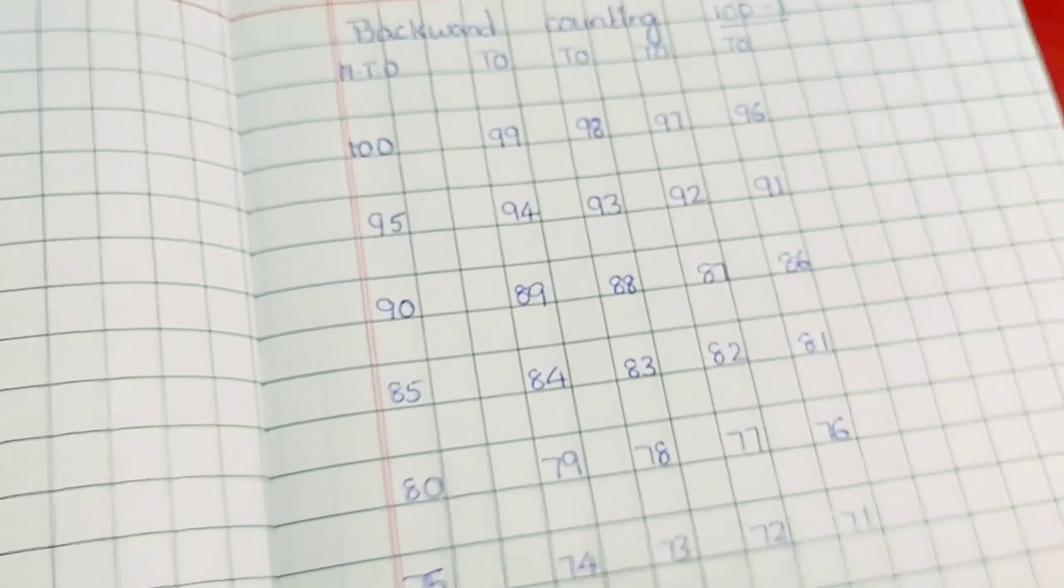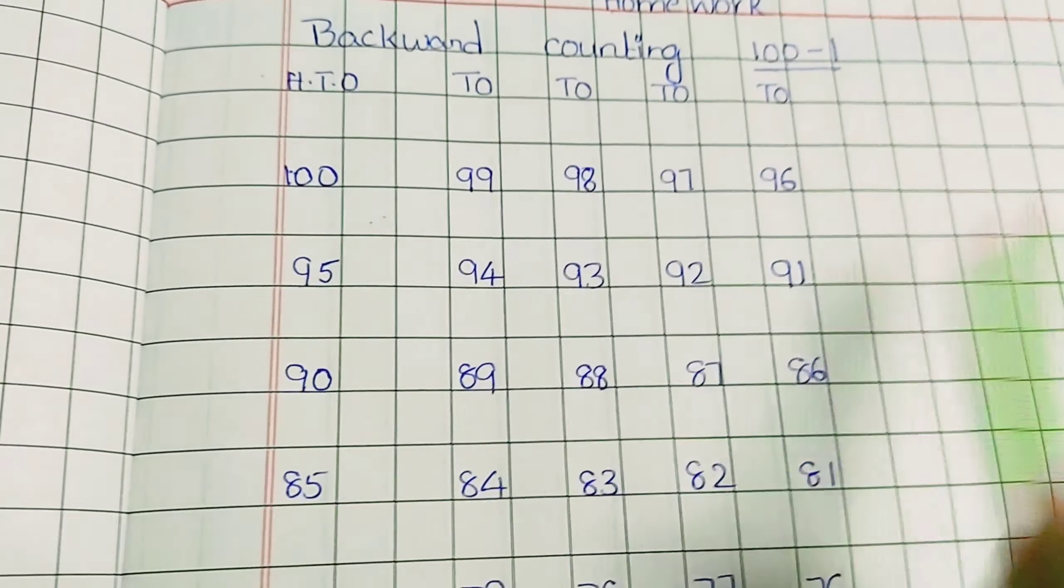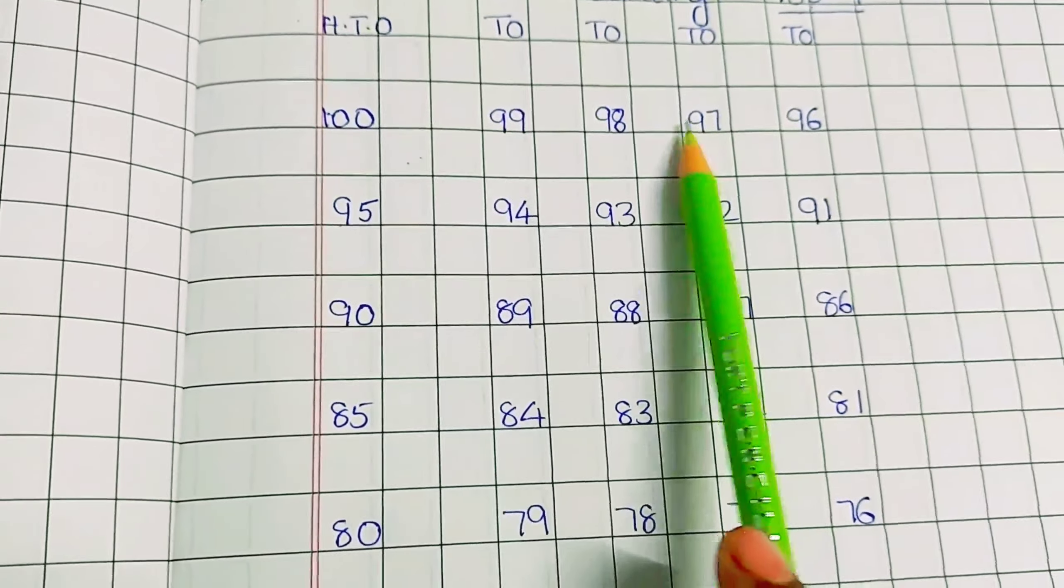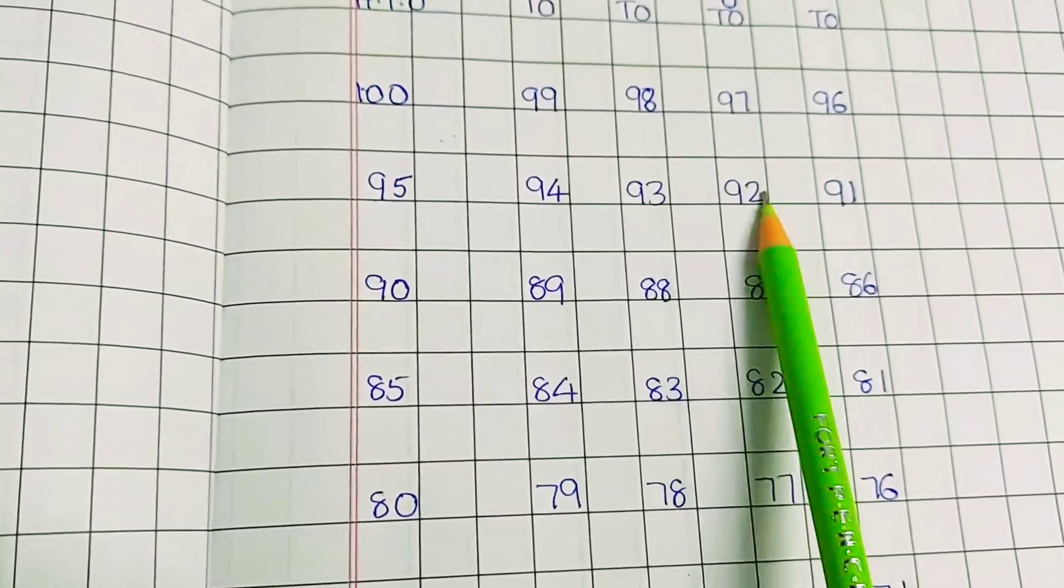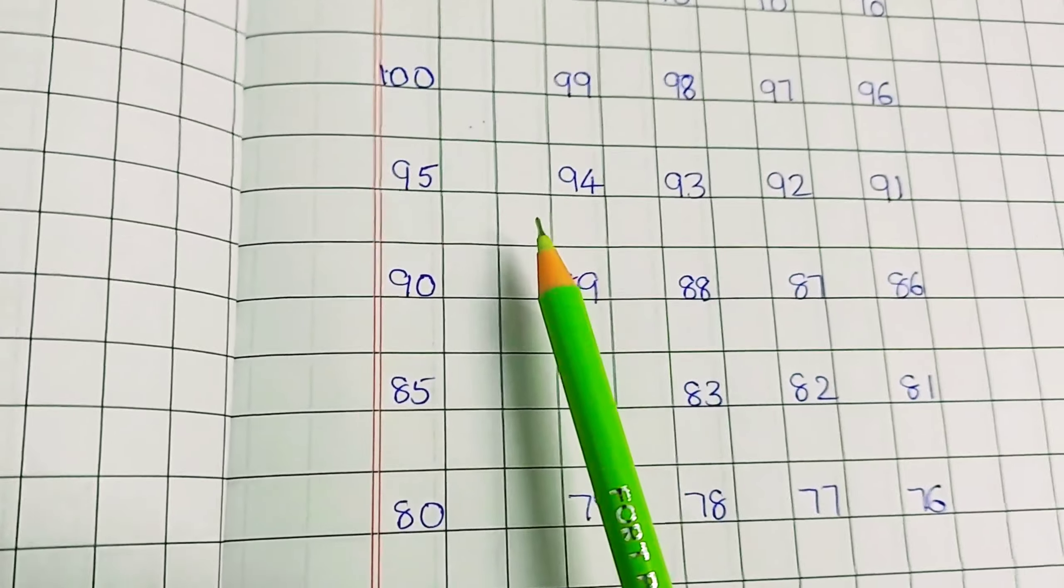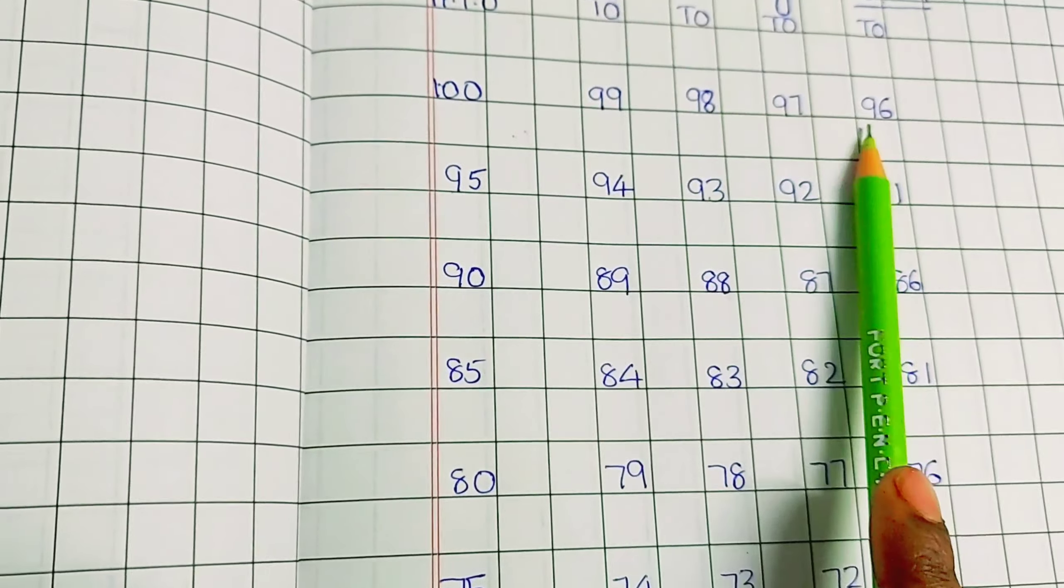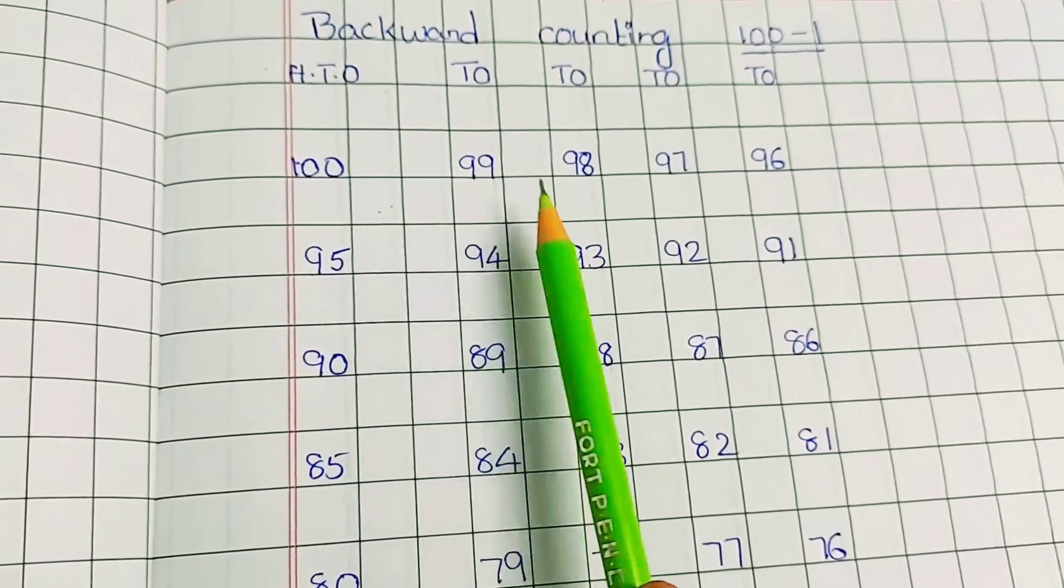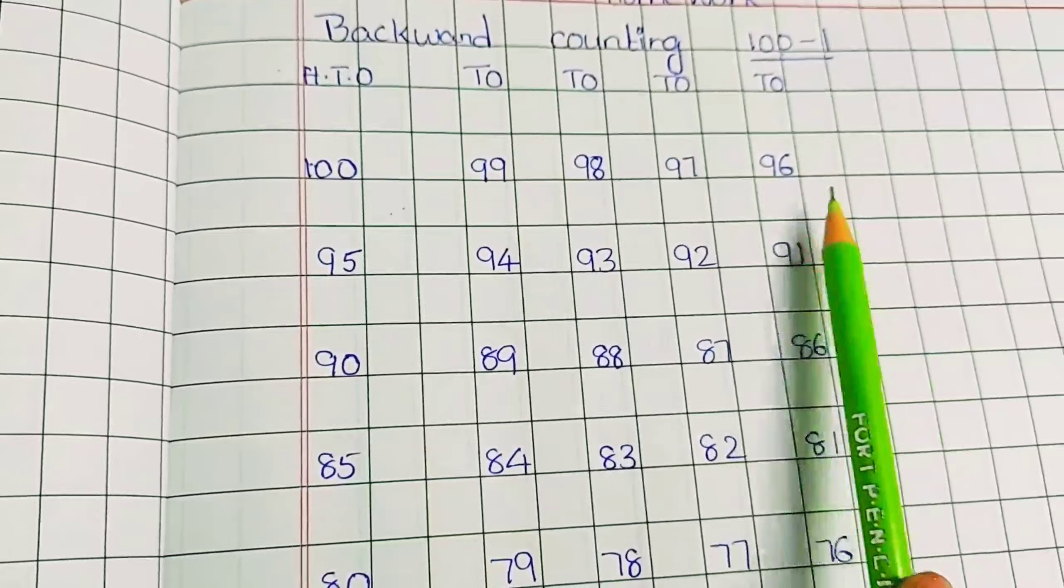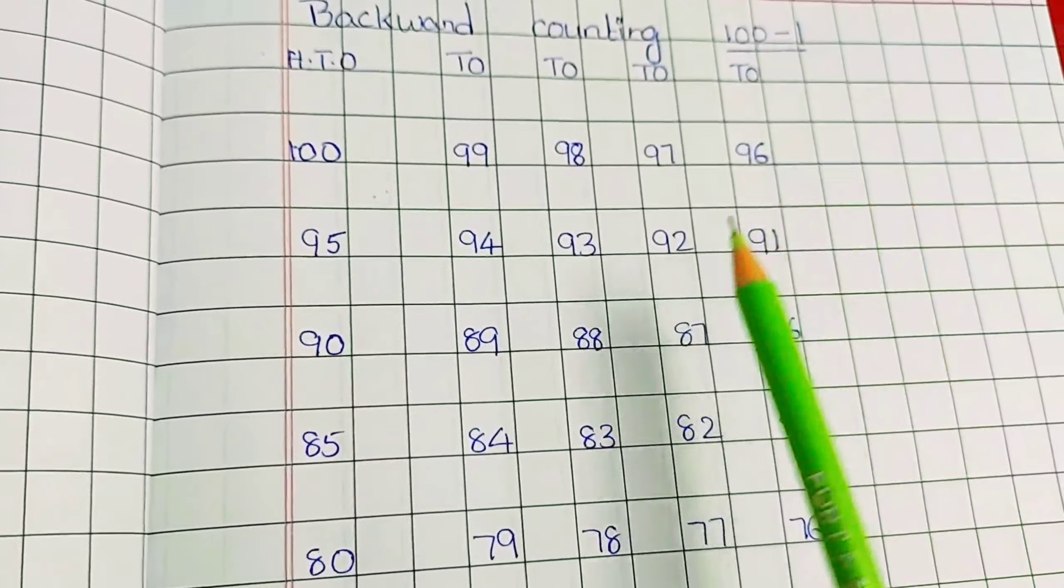Look at here clearly. There is backward counting 100 to 1. So 100, 99, 98, 97, 96, 95, 94, 93, 92, 91. When they will write in horizontal way, they don't, children don't confuse. So practice them like this, 100, 99, 98, 97, 96, 95, 94, 93, 92, 91.